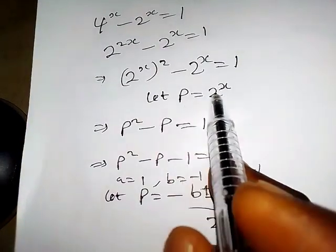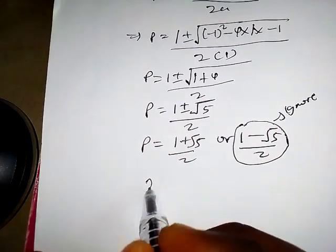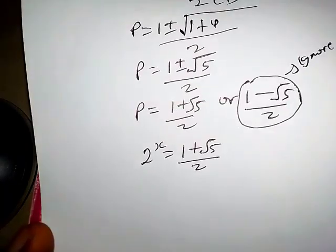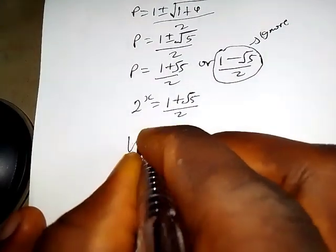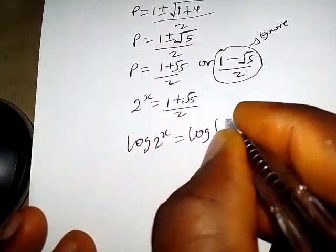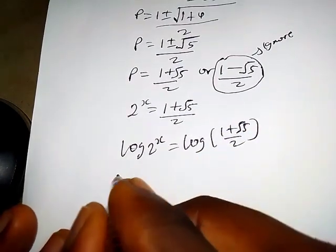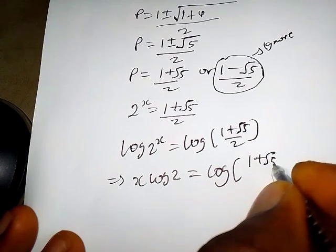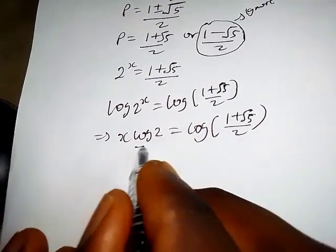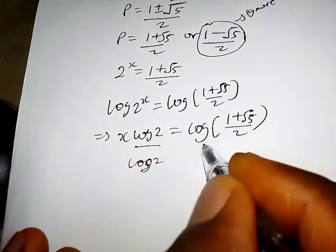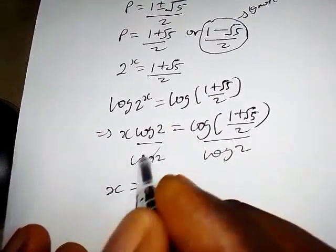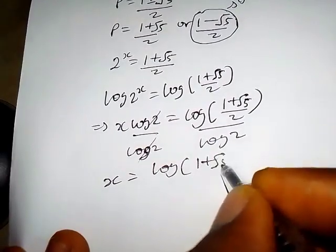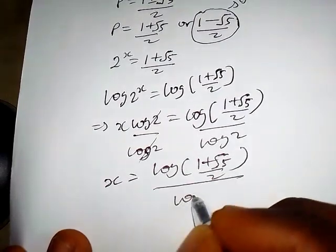Recalling that we let p equal 2 raised to the power x, we have 2^x equals (1 plus root 5) over 2. Taking the logarithm of both sides gives x times log 2 equals log of (1 plus root 5) over 2. Dividing both sides by log 2, we get x equals the natural logarithm of (1 plus root 5) over 2, divided by log 2. That's the answer, thanks for watching.